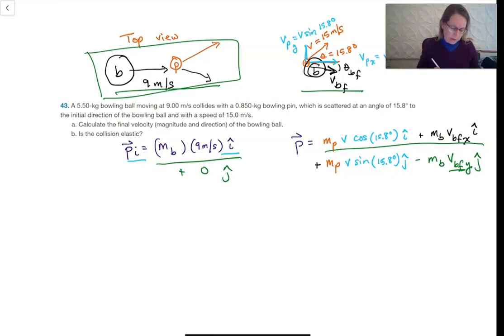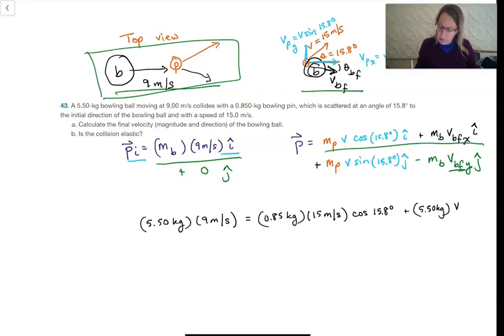When I equate these, I'm going to have the mass of the ball, 5.5 kilograms times 9 meters per second in the i-hat equals mass of the pin, which is light, 0.85 kilograms times 15 meters per second times cosine of 15.8 degrees plus 5.50 kilograms times the ball. I'm just going to call that Vx because that's what I need. So that's the i-hat equation. The j-hat equation gives me zero equals 0.85 kilograms times 15 meters per second times sine of 15.8 degrees minus 5.5 kilograms Vy.